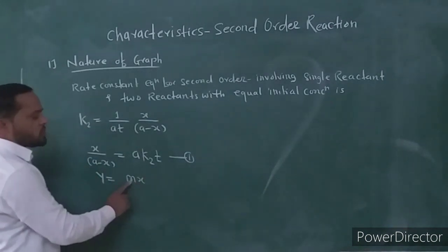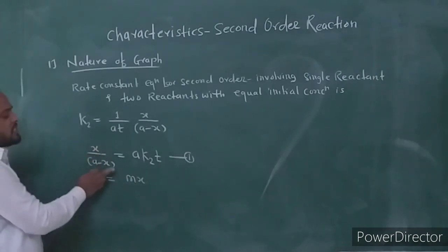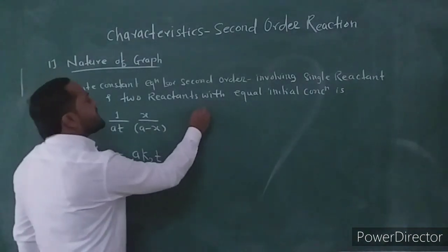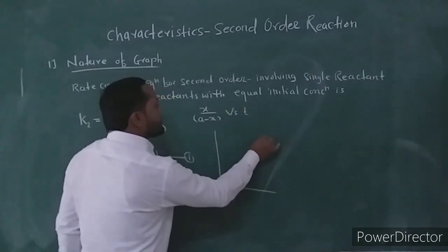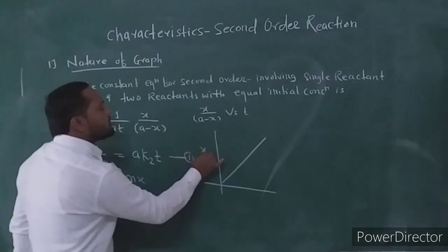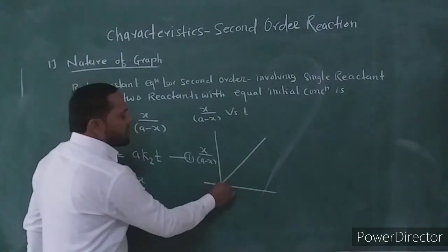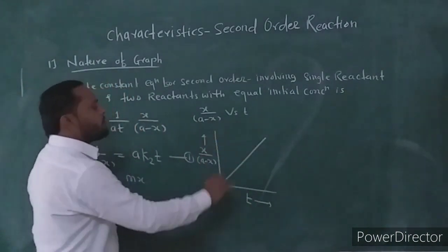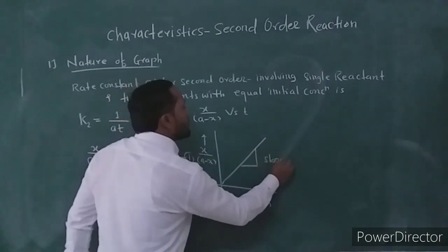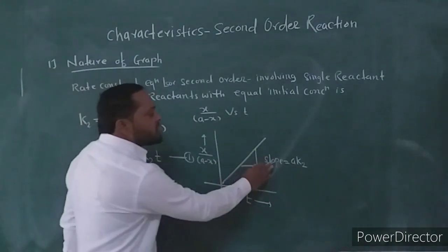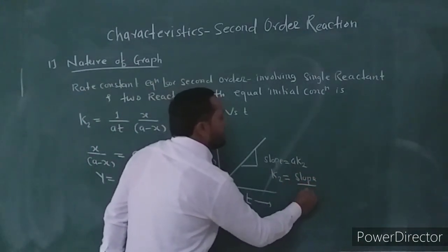We plot the graph of X upon A minus X against T. We obtain a straight line, and this straight line passes through the origin. The slope of this straight line is equal to A·K2. By knowing this slope, we can determine the rate constant: K2 is equal to slope divided by the initial concentration A.